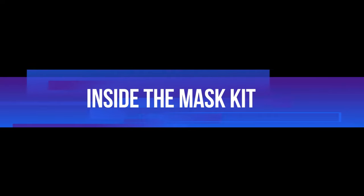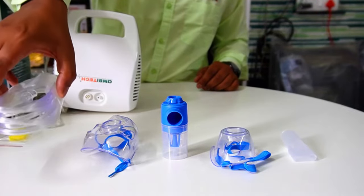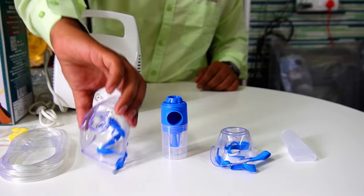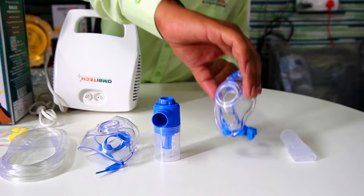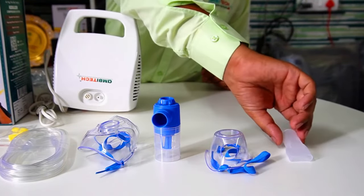Now let's look at the contents of the mask kit: the air tube, an adult mask, the medication chamber, a child mask, and a mouthpiece for oral inhalation.